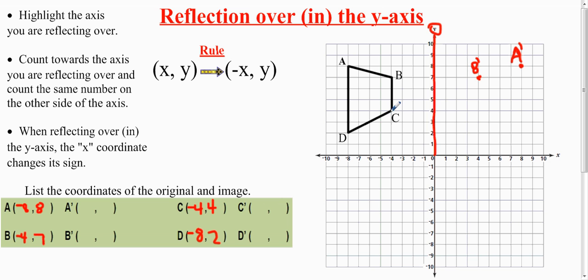C is 4 away: 1, 2, 3, 4. C prime has to be 1, 2, 3, 4 on the other side. D is 8 away, and D prime has to be 8 away. So now you put that as D prime.